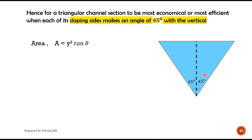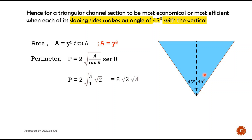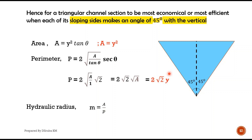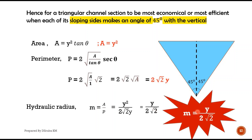Applying θ = 45° in the area equation, the area becomes A = y². For the perimeter, applying θ = 45°: P = 2√(y²) × sec 45° = 2y × √2 = 2√2·y. The hydraulic radius R = A / P = y² / (2√2·y) = y / (2√2). So the hydraulic radius for a most economical triangular channel section is R = y / (2√2).